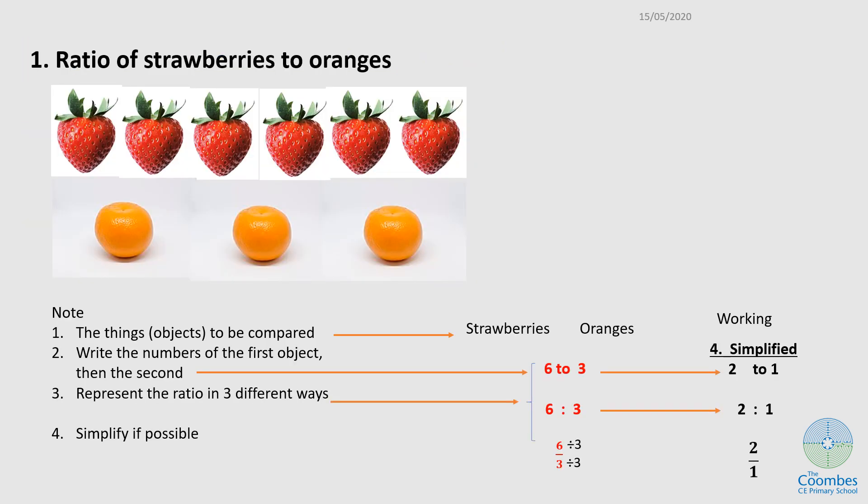So how do we go about solving this problem or writing the ratios? There are things I want you to take note of. First, the things or objects to be compared. In this case, they are strawberries first, then oranges. Second, you write the numbers of the objects as they appear in the question. The strawberries will come first, in this case six, then the oranges, three.